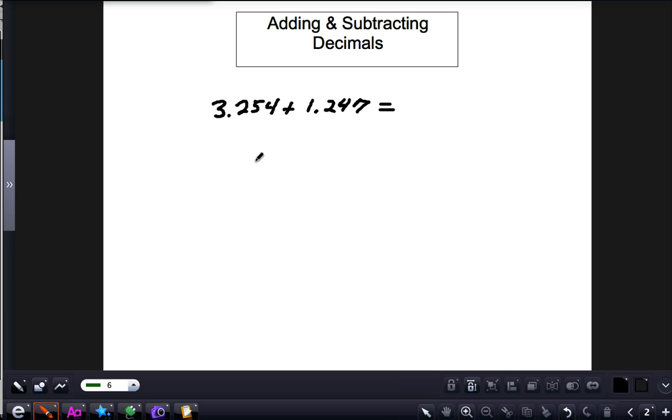just rewrite it vertically. For example, 3.254 plus 1.247. We've got the decimal points lined up and the tenths are lined up with the tenths, hundredths with hundredths, and thousandths with thousandths.